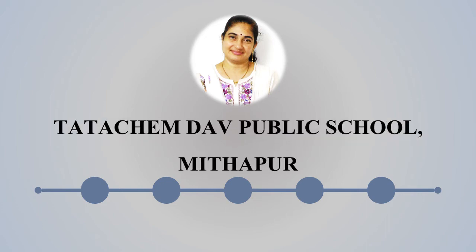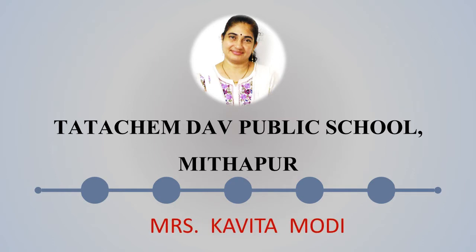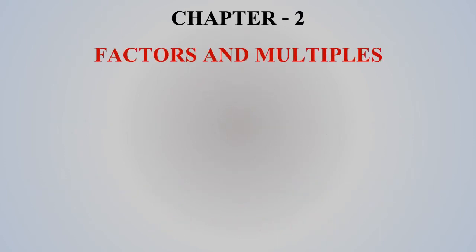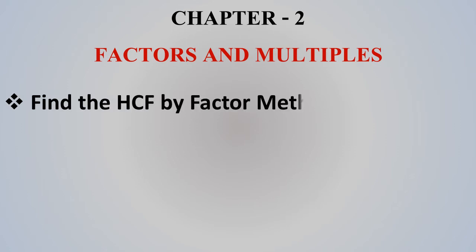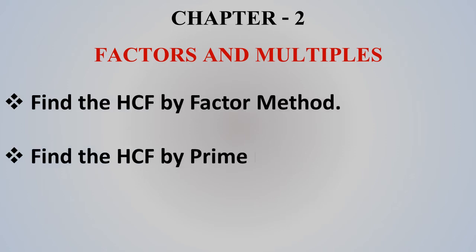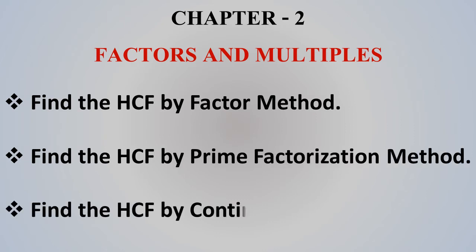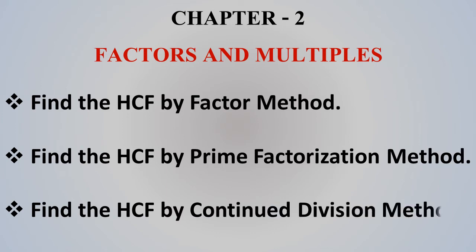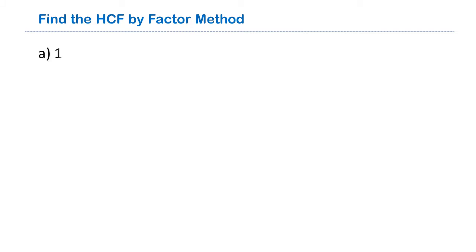Good morning students. Welcome to TataCAM DAV Public School Meathapur Online Classes. Myself Kavita Modi, your master teacher for Class 6. We are going to continue Chapter 2, Factors and Multiples. In this chapter, our topics are: Find the HCF by Factor Method, Find the HCF by Prime Factorization Method, and Find the HCF by Continued Division Method. Our first topic is: Find the HCF of 12, 30, and 54 by Factor Method.